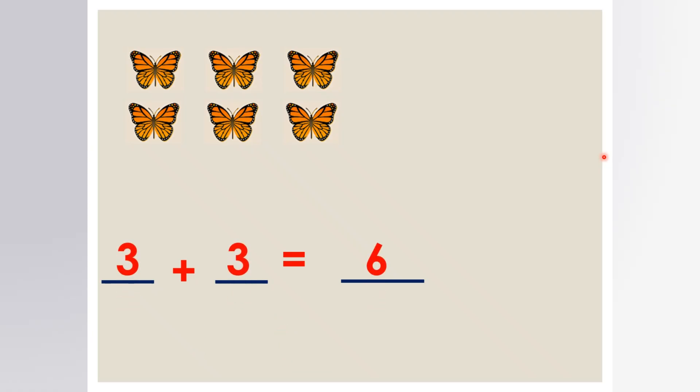It gives us six total butterflies. On the grid, we can shade three squares for two rows.